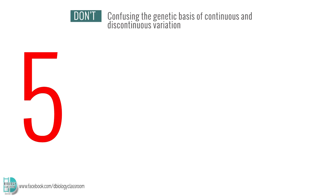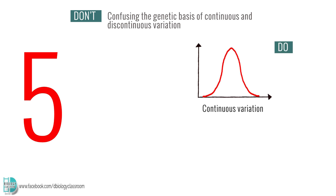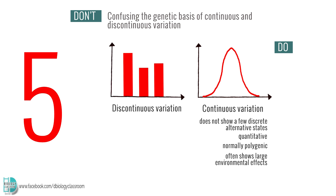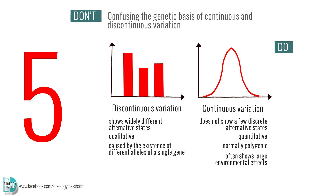Number 5: Confusing the genetic basis of continuous and discontinuous variation. Continuous variation does not show a few discrete alternative states. It is quantitative, normally polygenic, and often shows large environmental effects. Discontinuous variation shows widely different alternative states. It is qualitative. These phenotypic differences are caused by the existence of different alleles of a single gene, and are usually not affected by environmental factors.